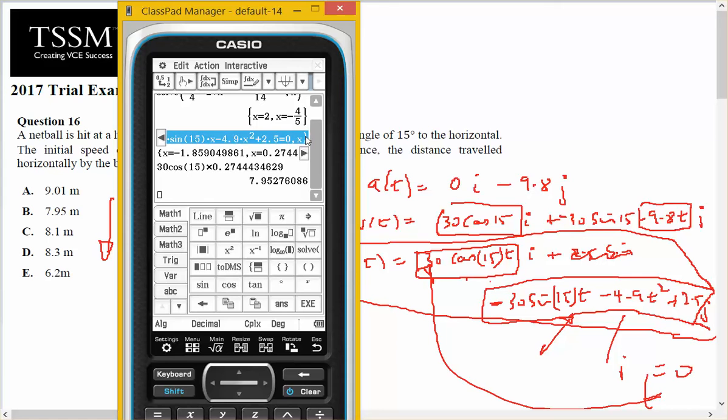Setting it equal to zero, solving for t. That gives me two times. I take the positive time and I put that into the displacement.